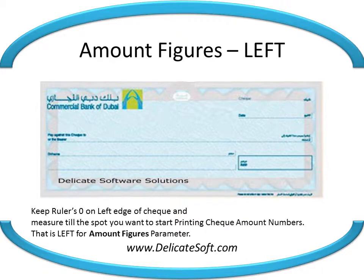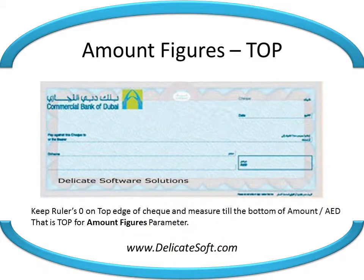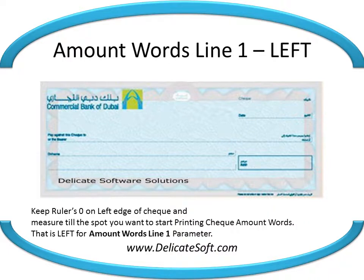Keep the ruler's zero on the top edge of the check and measure till the place you want to start printing the check amount in figures — that is the left for the amount figures parameter. Then keep the ruler's zero on the top edge and measure till the bottom of the currency or AED — that is the top for the amount figures parameter.